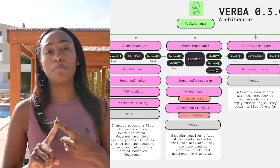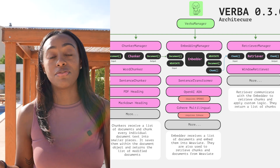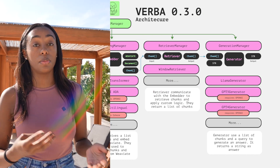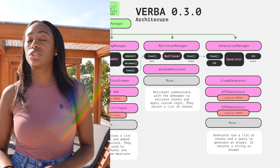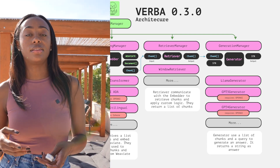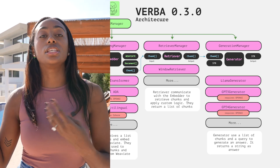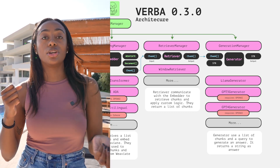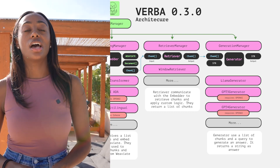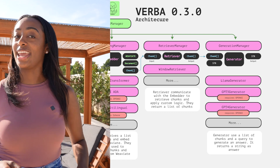Now that we have our data uploaded, chunked, and vectorized, Verba is retrieving the context that is important or relevant to your query. The retriever manager is assigned the task to make sure that a query relevant to blog post one is retrieved, and it's not retrieving documents from document ten. This is the way to ensure that your query is getting answered correctly.